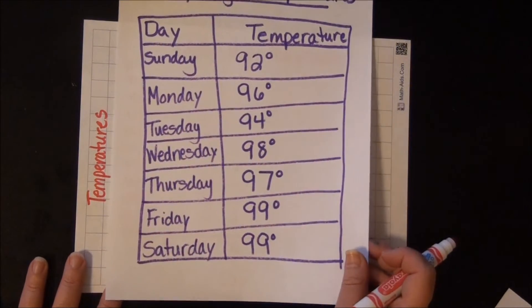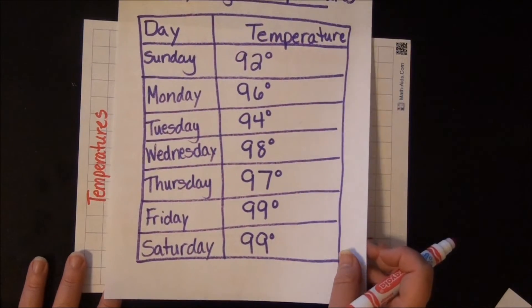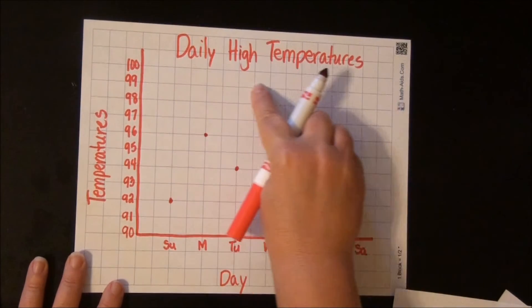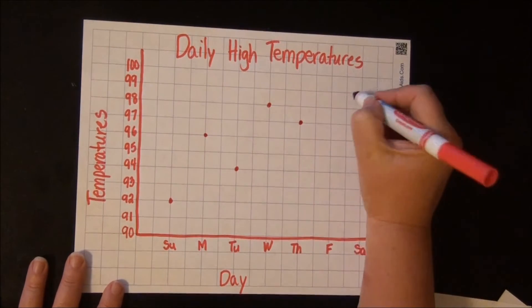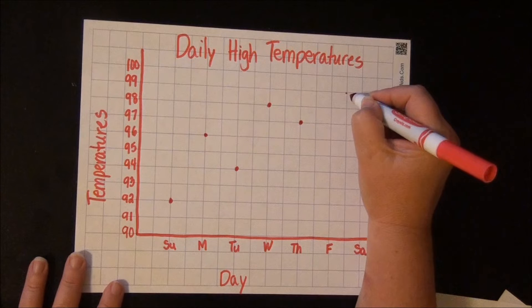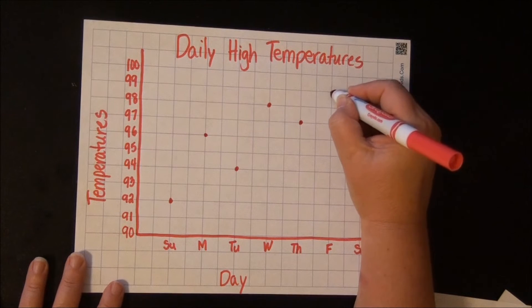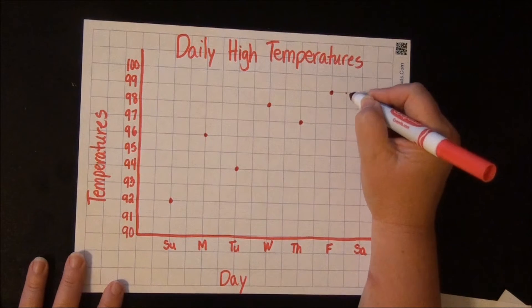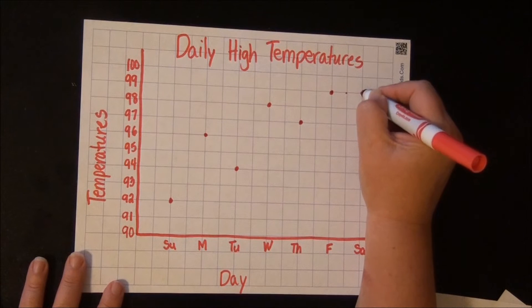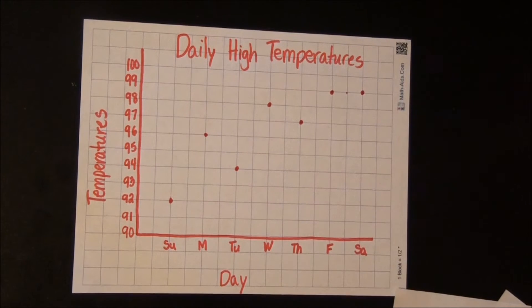Now Friday and Saturday were both 99. So we're going to go up to 99 and over to Friday. We'll make a dot for Friday and then over to Saturday, make a dot for Saturday. Now I've plotted my points. Those are called points.